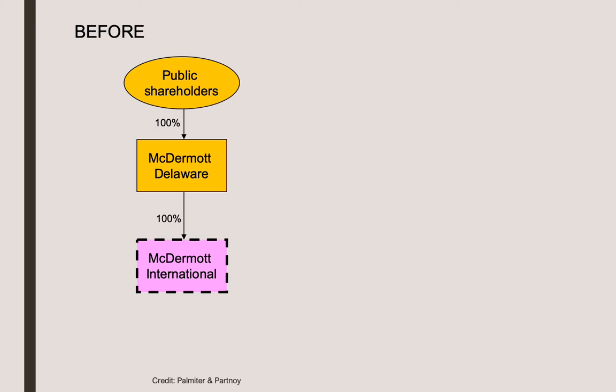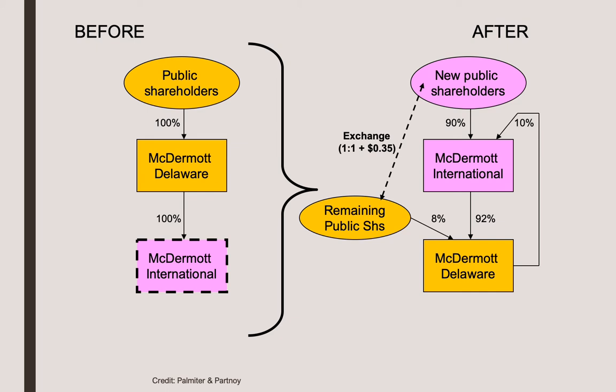It's a little confusing, but the most important thing to note is that, effectively, McDermott International and McDermott Delaware switched places. McDermott Delaware, in the previous situation, was the parent — in other words, it owned McDermott International. After the reorganization, the roles have flipped: McDermott International becomes the parent, and McDermott Delaware is the subsidiary.